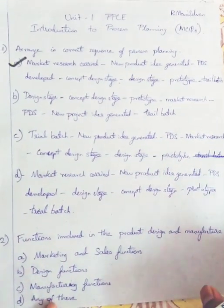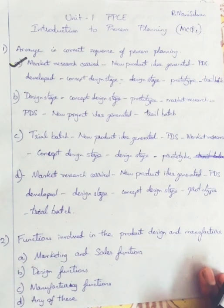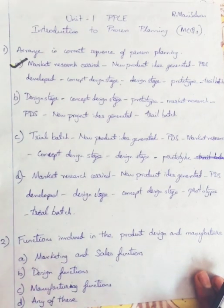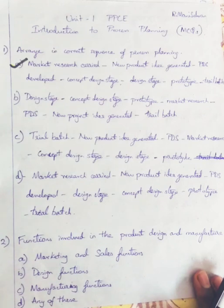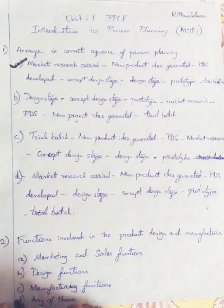Question 2: The functions involved in Product Design and Manufacturing are Marketing and Sales Function, Design Function, and Manufacturing Function. We will be selecting Option D, All of these.